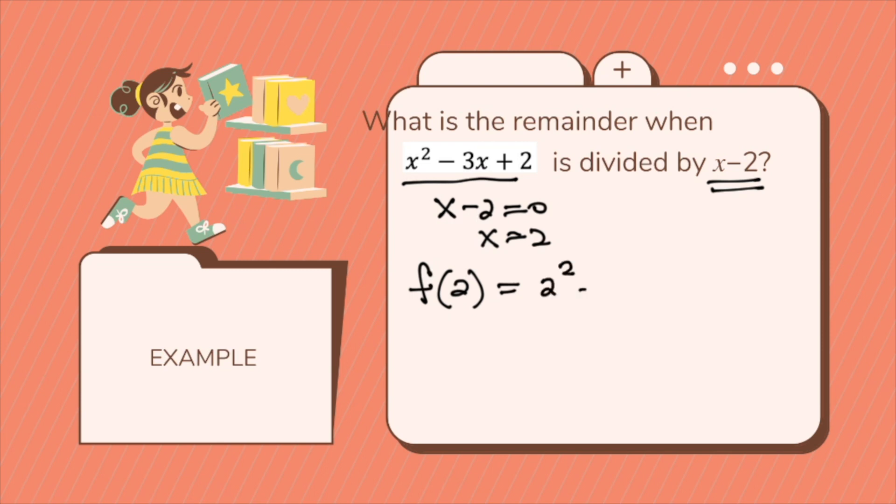So you'll have 2 squared minus 3 times 2 plus 2. So you'll have 4 minus 6 plus 2, that is 0. Since there's no remainder, hence we can say that x minus 2 is a factor of x squared minus 3x plus 2.